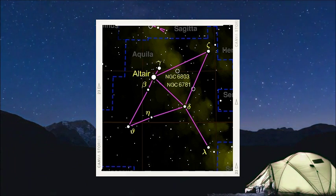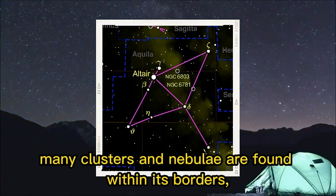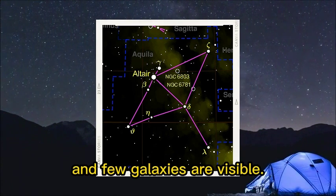Due to this location, many clusters and nebulae are found within its borders, but they are faint, and few galaxies are visible.